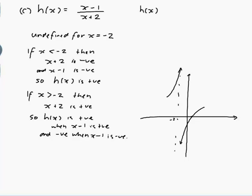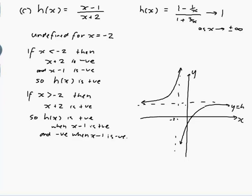h of x, I want the limit of that as x goes to infinity. I'll divide top and bottom by the biggest power of x. So 1 minus 1 over x divided by 1 plus 2 over x. As x goes to infinity, 1 over x becomes 0 and 2 over x becomes 0. So this approaches 1 as x goes to infinity. Even if x was minus infinity, it would still be 1. So here's y equals 1, and my graph does this. So y equals h of x.